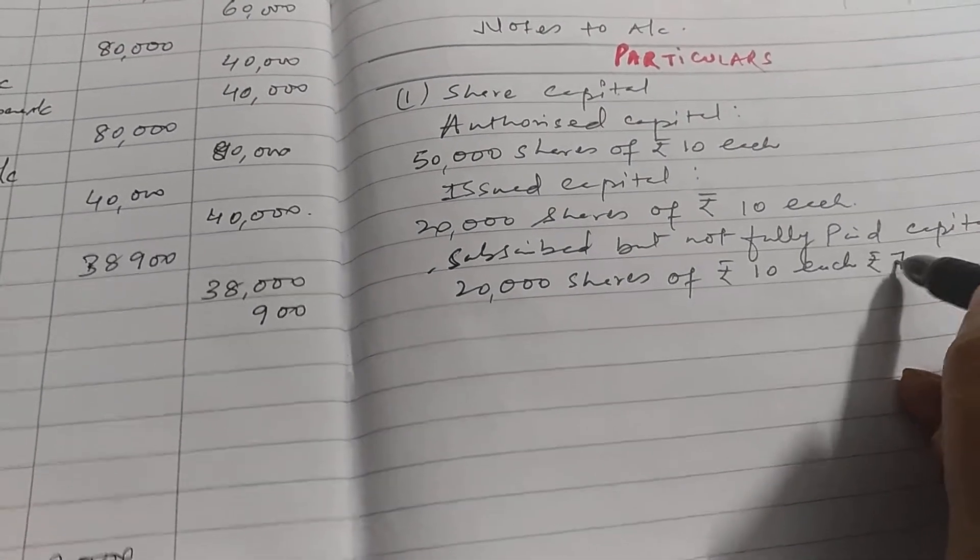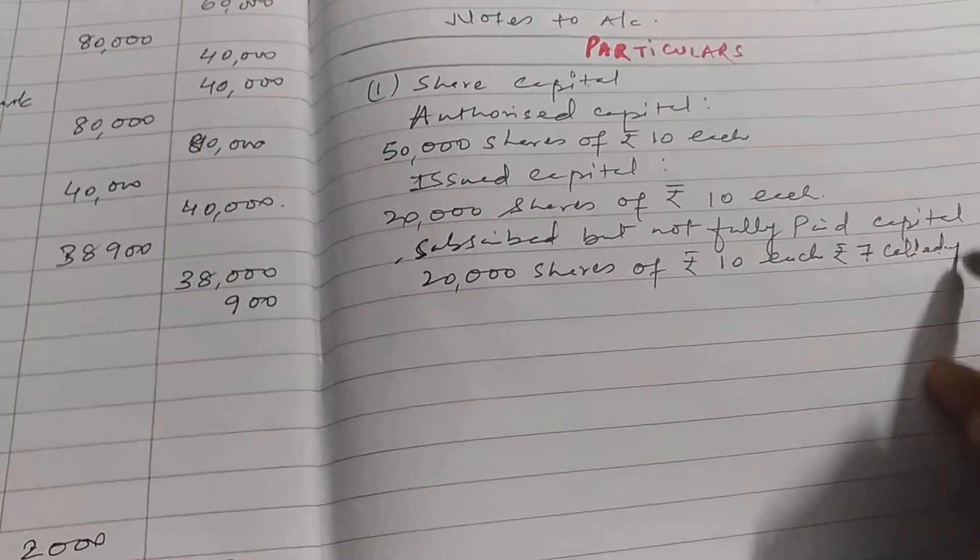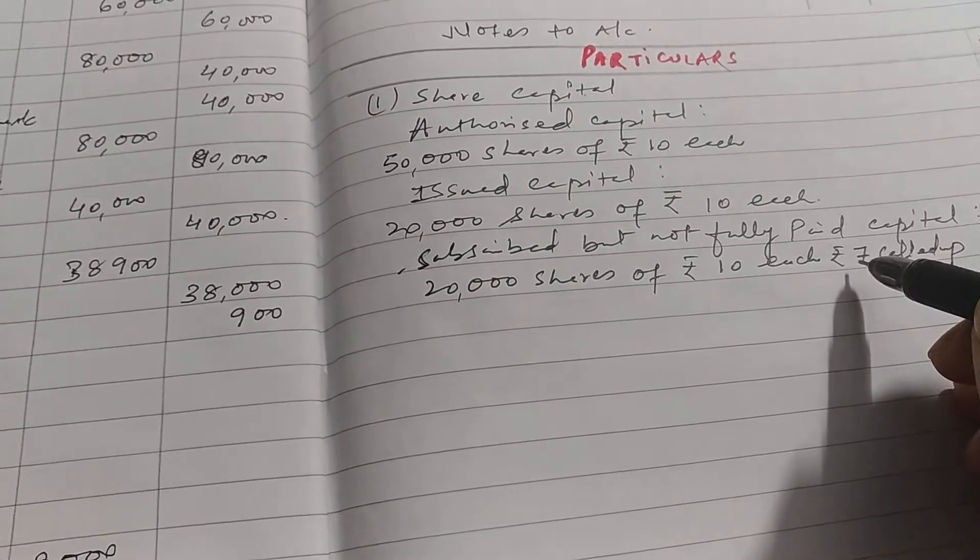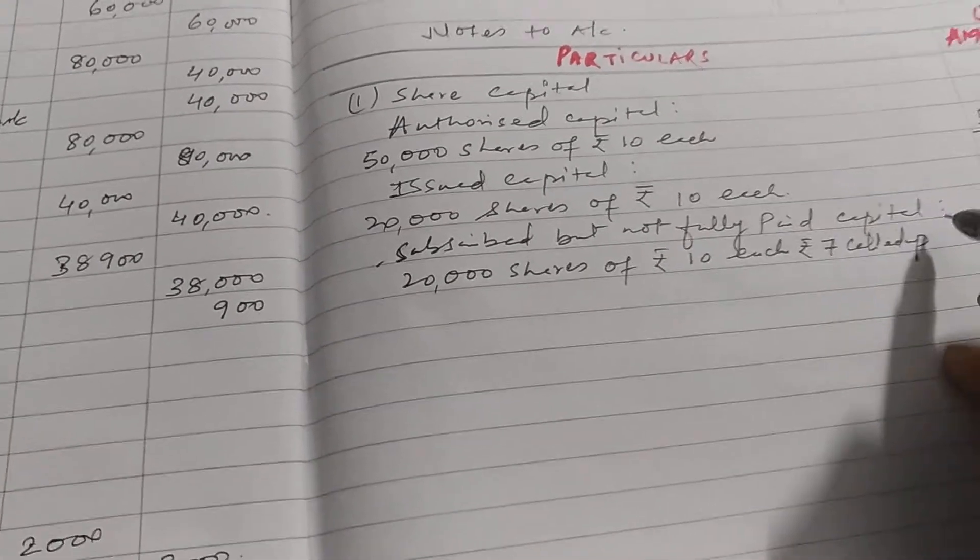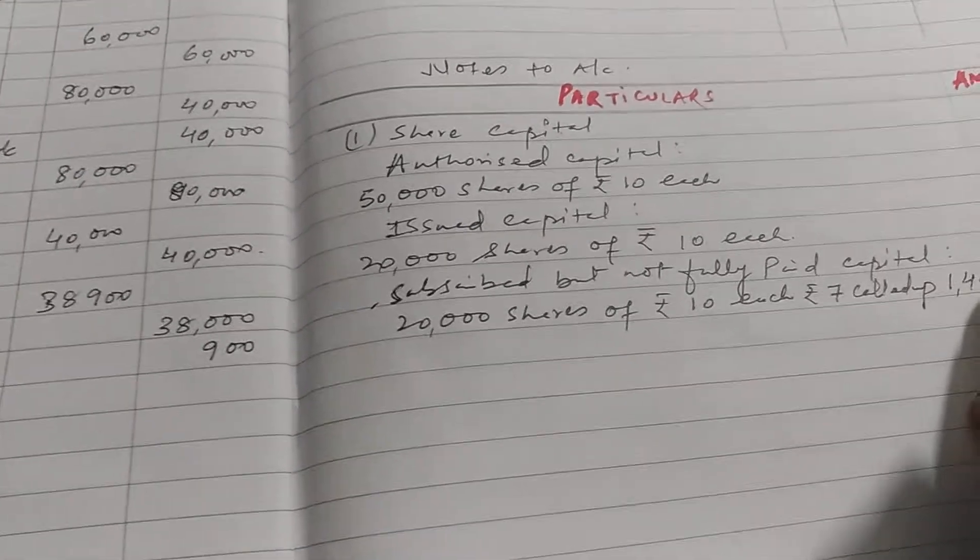So 20,000 into 7 is one lakh forty thousand.